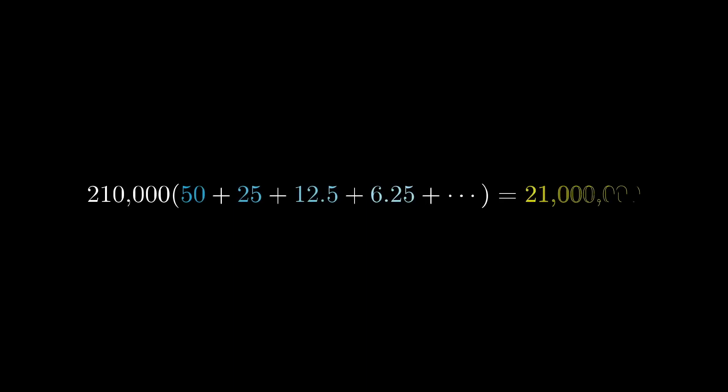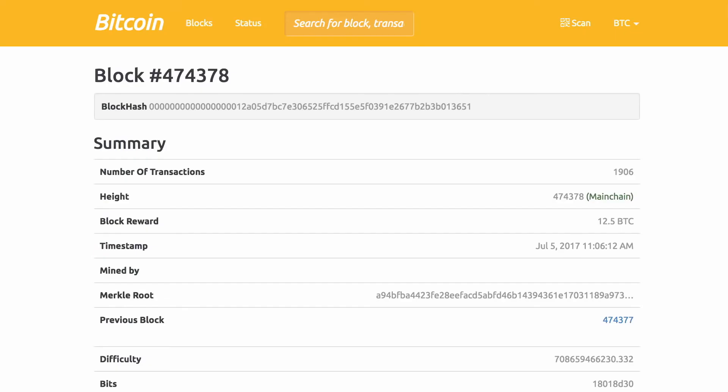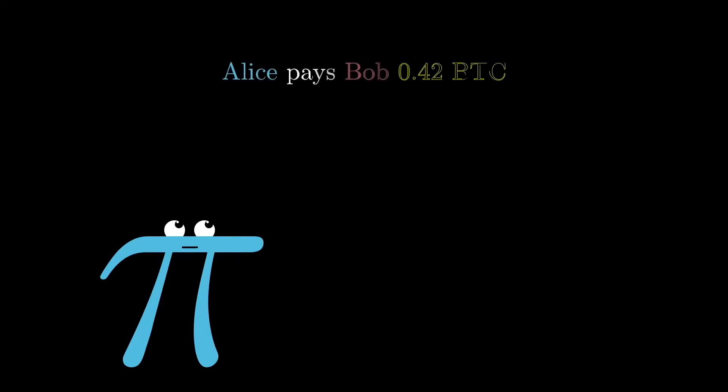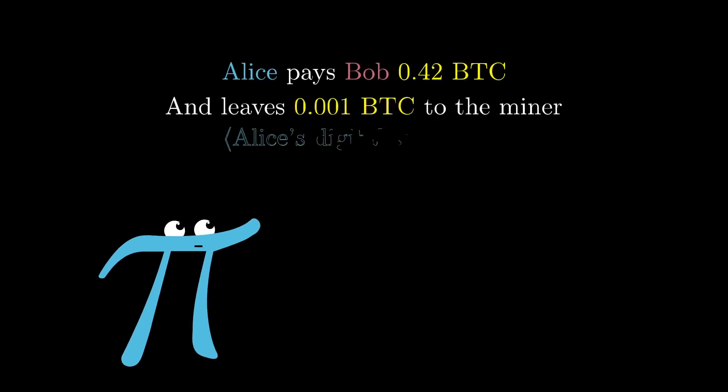And because this reward decreases geometrically over time, it means there will never be more than 21 million bitcoin in existence. However, this doesn't mean that miners will stop earning money. In addition to the block reward, miners can also pick up transaction fees. The way this works is that whenever you make a payment, you can purely optionally include a little transaction fee with it that's going to go to the miner of whichever block includes that payment.